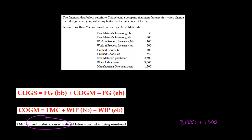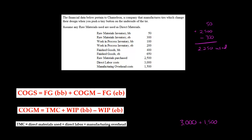We need our direct materials used. Let's assume any raw materials used are used as direct materials — we're not going to worry about indirect materials here. We start with $50 of raw materials beginning balance, then we add $2,500 in purchases. But at the end of the period we still have $300 left, so we subtract that because they clearly have not been used. That means there's $2,250 used — so direct materials used is $2,250.